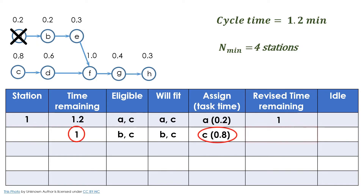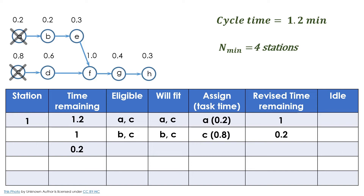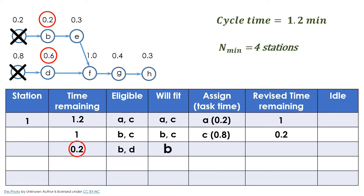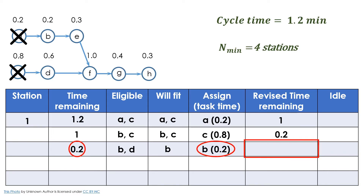The revised time remaining equals 1.0 minus 0.8, which equals 0.2 minutes, meaning we need to work more in station 1. The next eligible tasks are tasks B and D. Task B fits in station 1 as its time equals the remaining time, while task D's time is more. So, only task B will fit in station 1. Consequently, assign task B to station 1. The revised time remaining equals 0.2 minus 0.2, equal to 0 minutes, which means station 1 is completely full with no idle time.